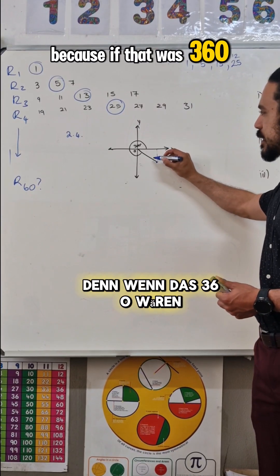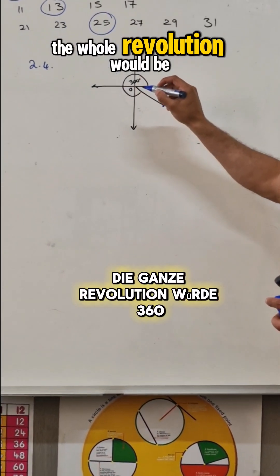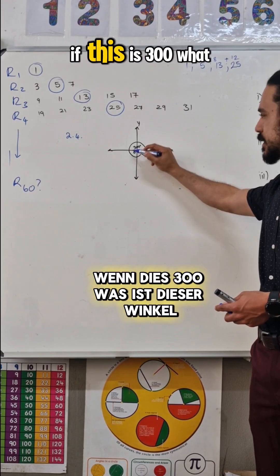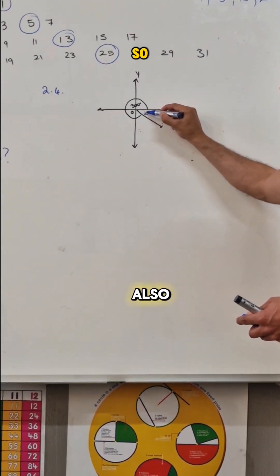Now, what is the difference? Because if that was 360, the whole revolution would be 360, what is the difference if this is 300, what is that angle?